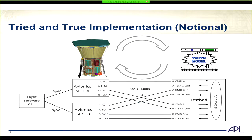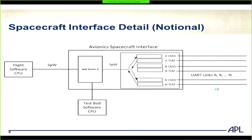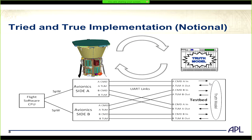This is a tried-and-true implementation of how you would connect spacecraft systems into the test bed and truth model. You'd have the flight software CPU and avionics, and then UART links over to the test bed, which could substitute for components, inject errors, or inject truth data. Now I want to take a look inside the avionics side A portion, because this will help with my explanation further on.